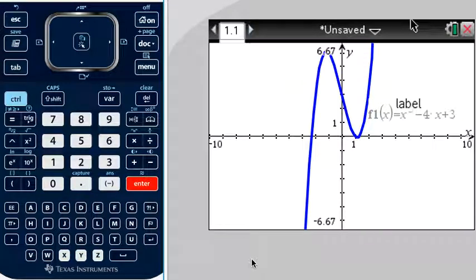So here we've got our function that we previously graphed, and now we're going to find zeros. The zeros are the x values of where the x-intercepts are, so where the graph crosses the x-axis.